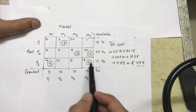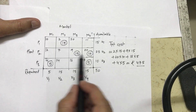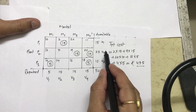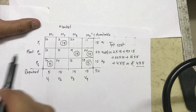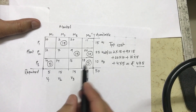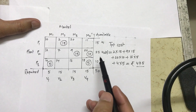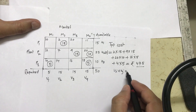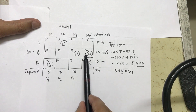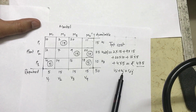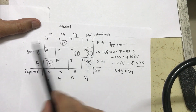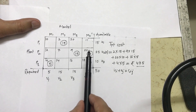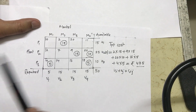First, I take the u value equal to 0 for the row with the maximum number of allocations. I have two rows — row 2 and row 3 — both with equal allocations, so I can choose either. I'm taking u2 equal to 0. For non-empty cells, the formula is: ui plus vj equals cij, where ui is the row value, vj is the column value, and cij is the cost shown in that cell.